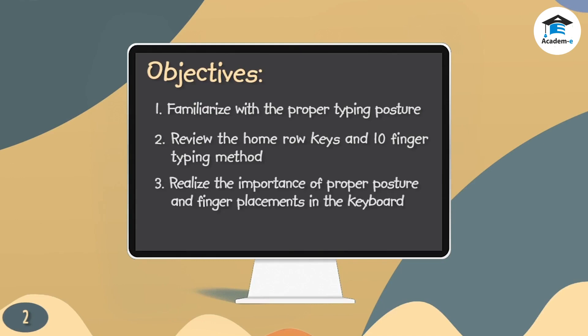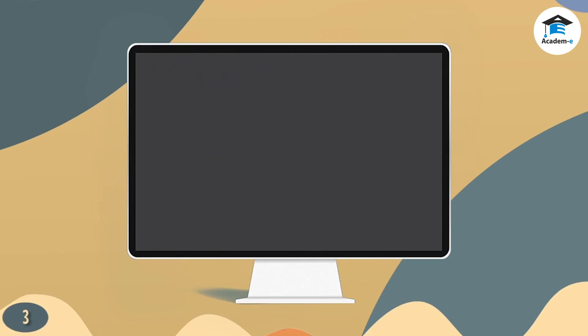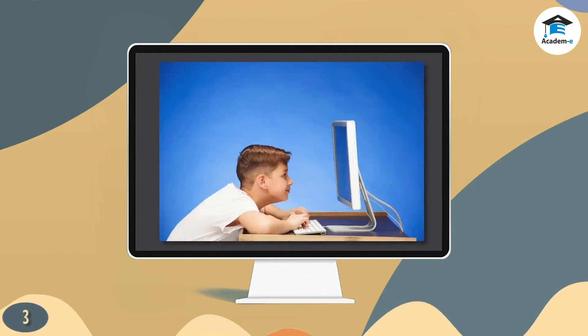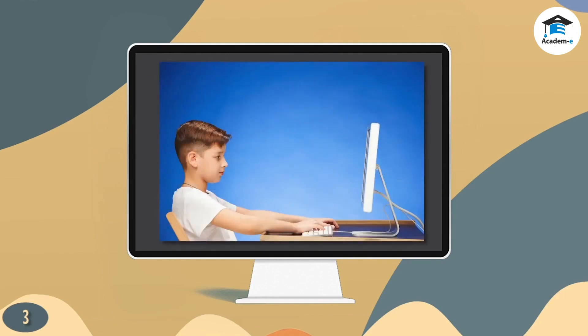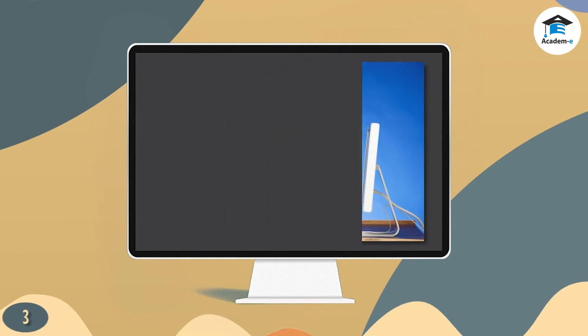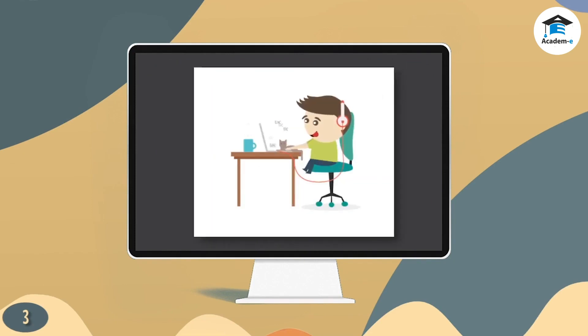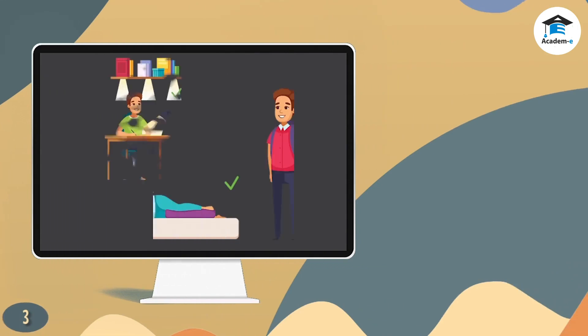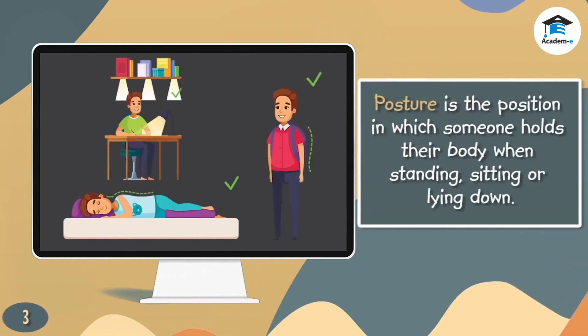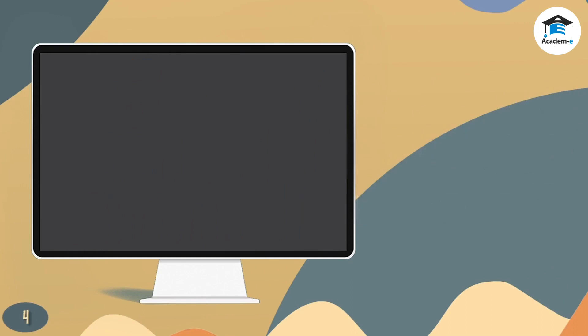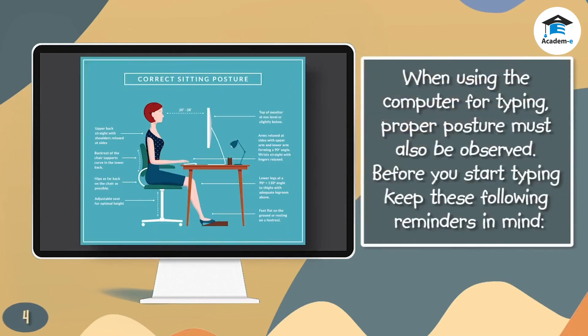Check your current sitting position. Are you seated like this or like this? The way we sit affects our speed in typing. It may also cause us to have a painful back if we are not seated properly. Proper posture is very important as it may have implications for one's health. When using the computer for typing, proper posture must also be observed. Before you start typing, keep these following reminders in mind.